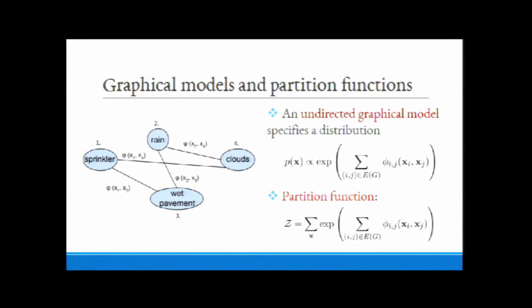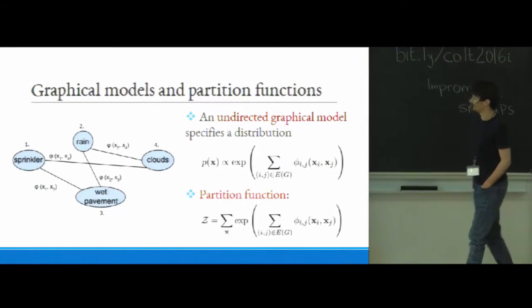The way the probability distribution is specified is that it's proportional to the exponential of essentially the sum over the edges of the graph of some local potentials φ. And then the partition function is basically the normalizer in that proportional to equation.